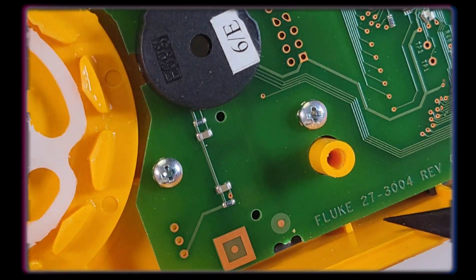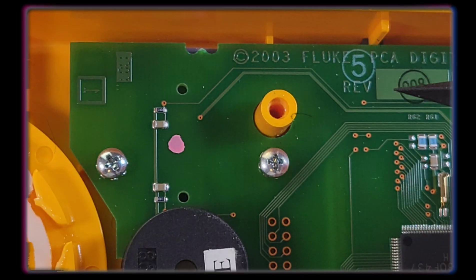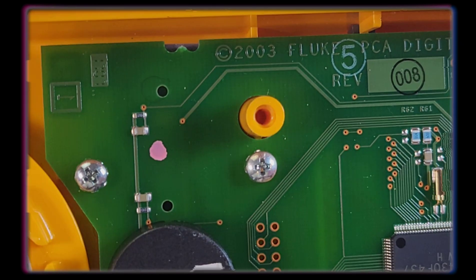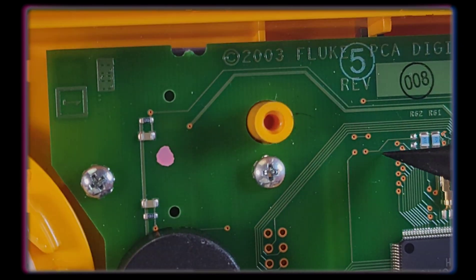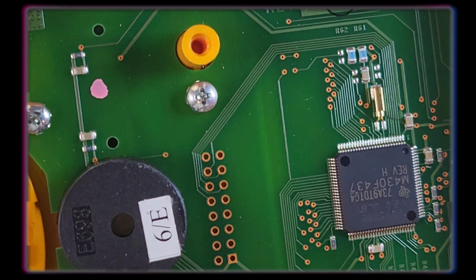And as you can see at the bottom here, Fluke 27 Revision 5, and that is also stamped here, dated 2003. Once again, these first came out in 1986. This model, definitely a newer version, dated 2003 with the newer style chip.